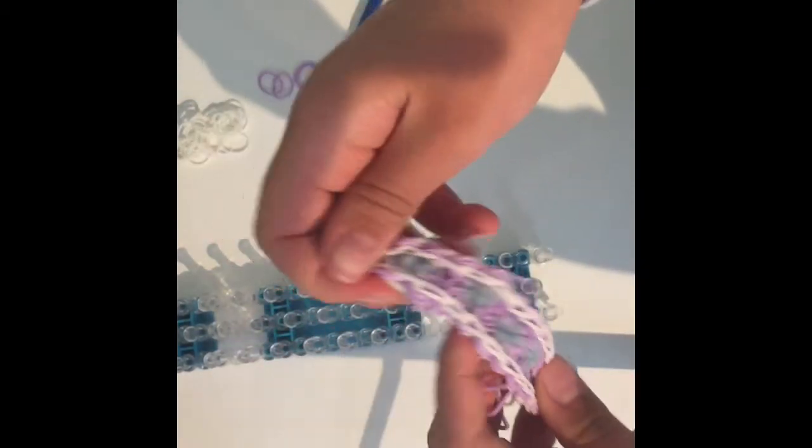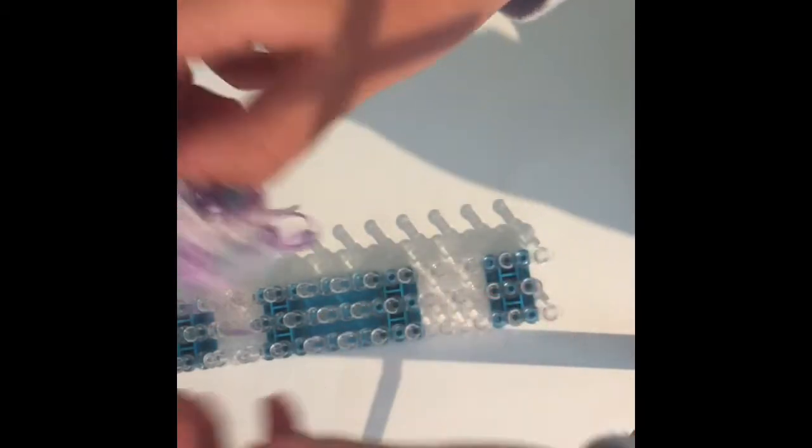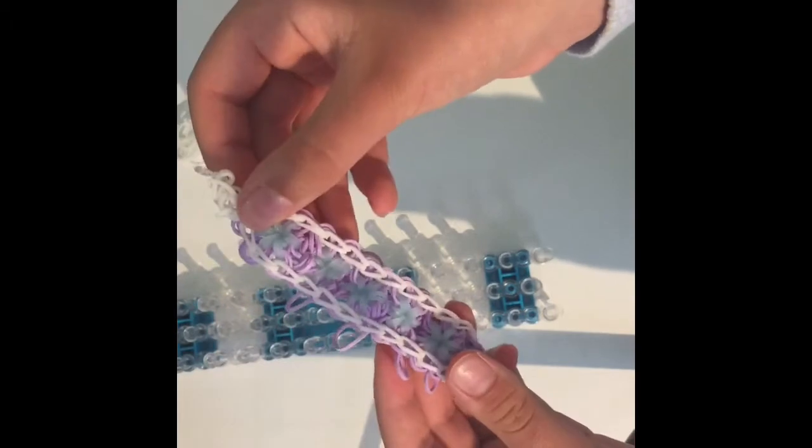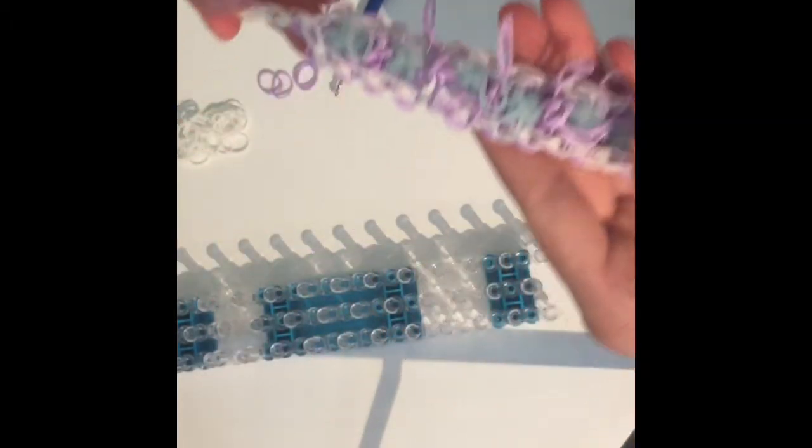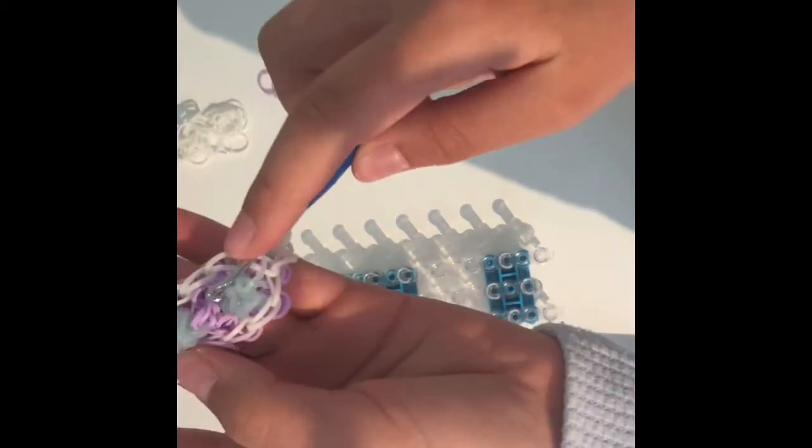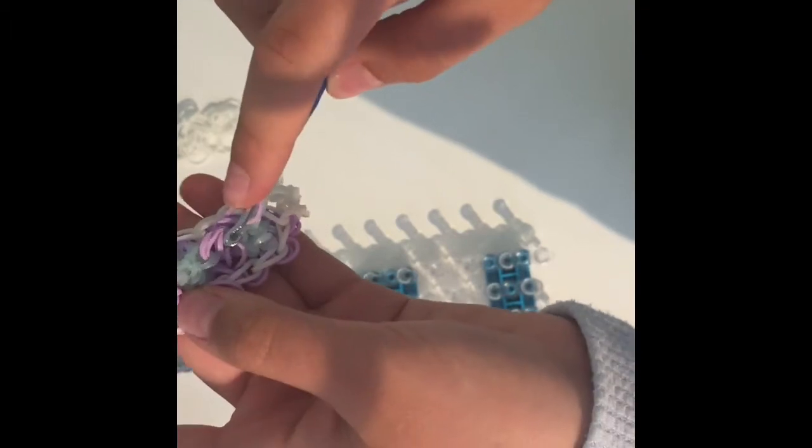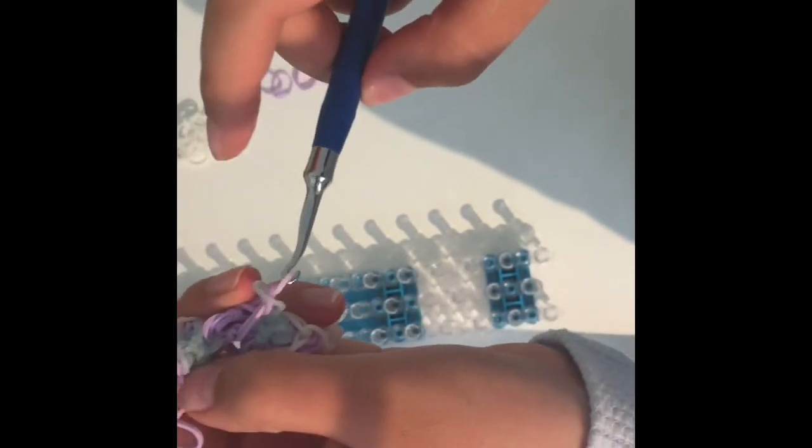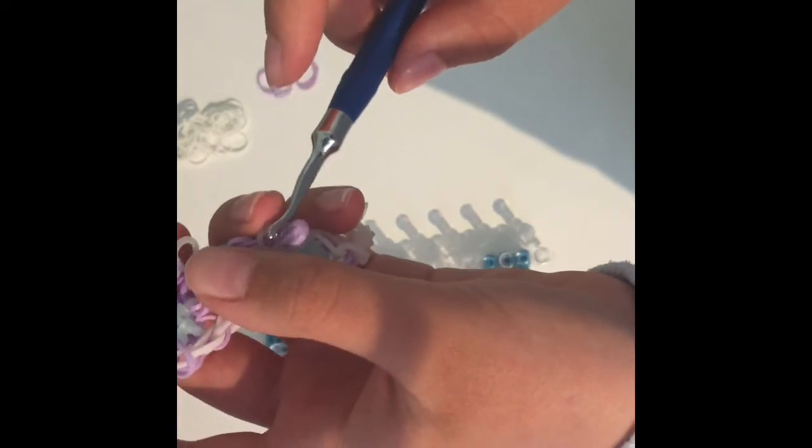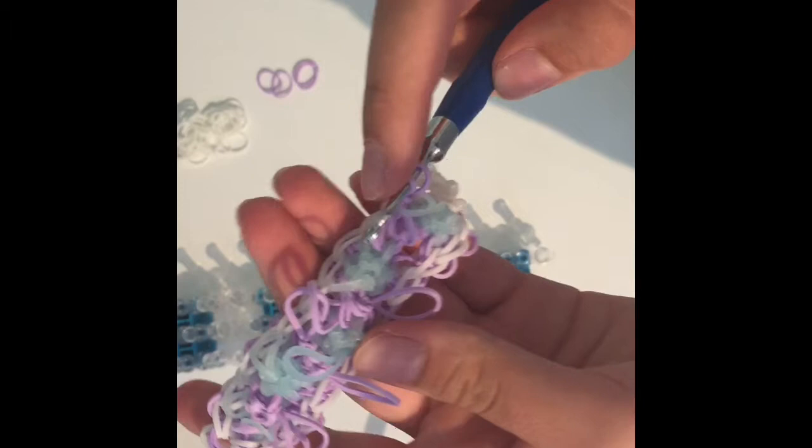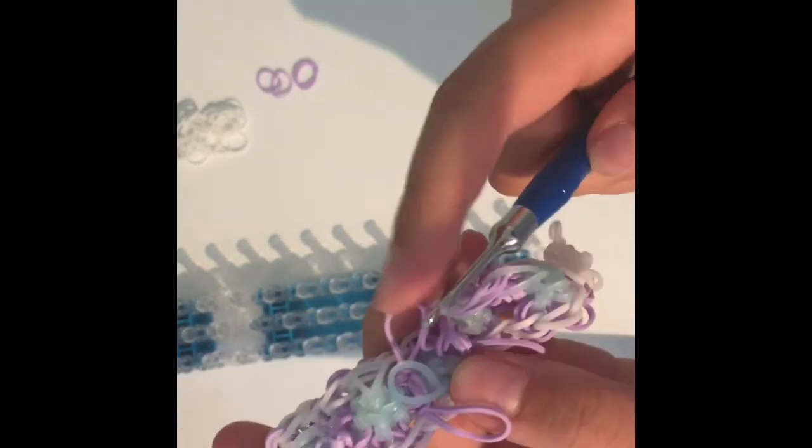But now I'm going to show you how to clean it up. First, you're going to turn it so it's kind of inside out so you can see this side. And then you're going to come from this side and grab your blue band. And then you're going to grab your two purple slip knots and pull them through your blue band, both of them.